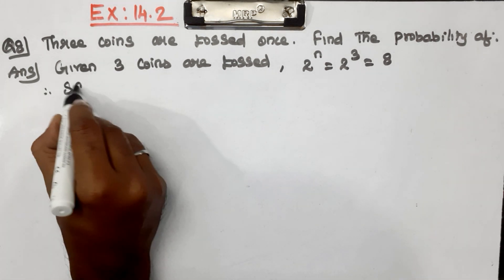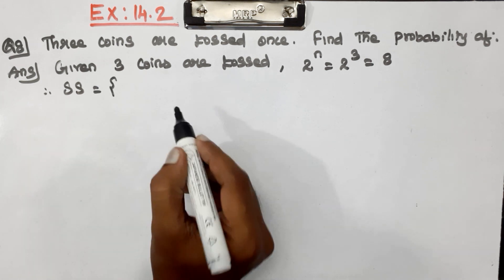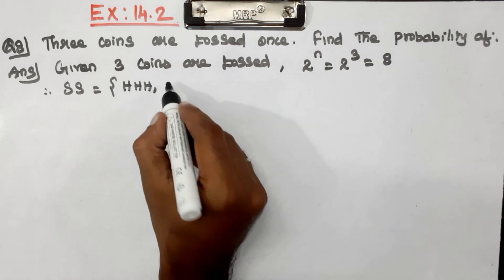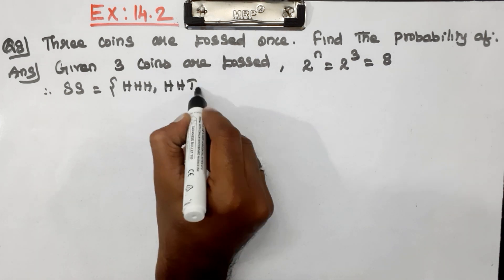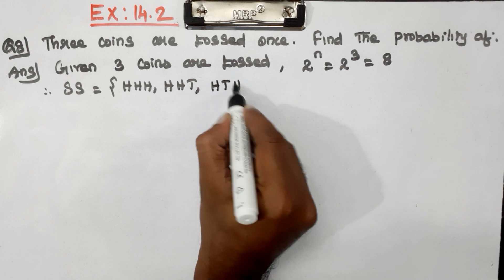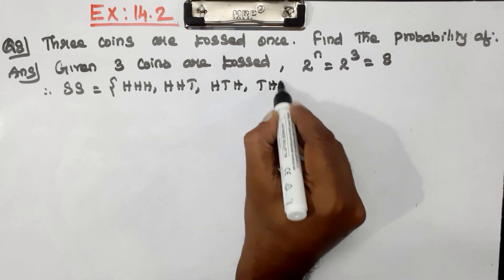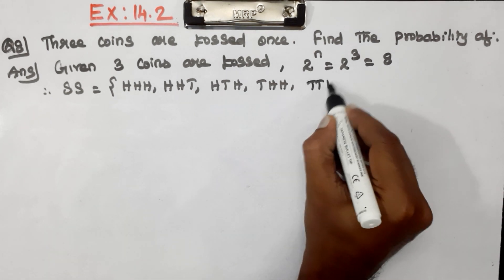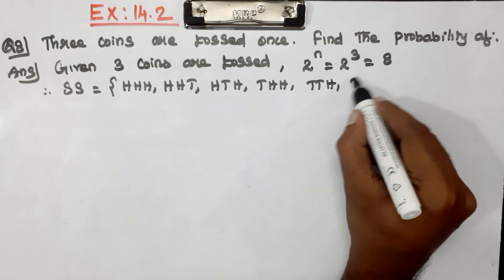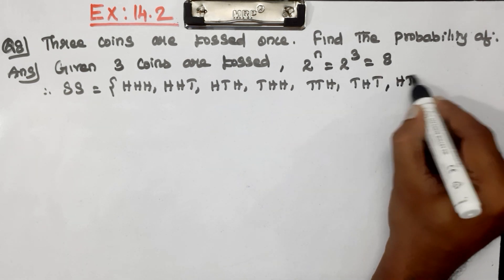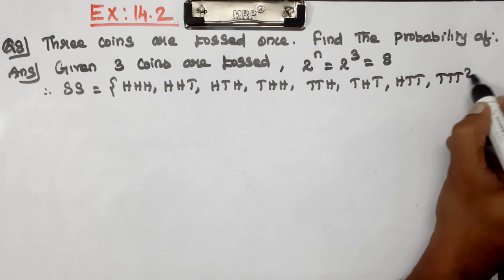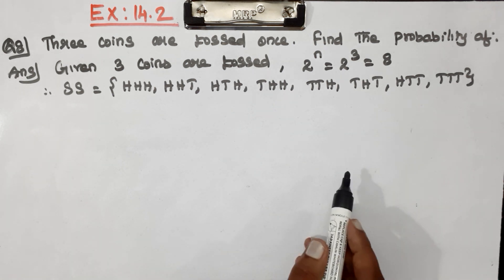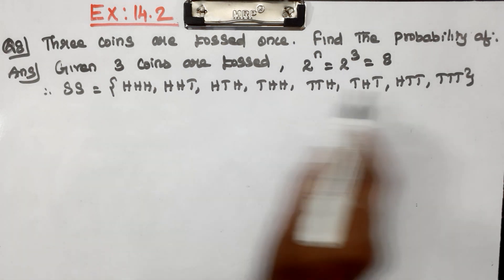Therefore, the sample space for three coins is: Head Head Head, Head Head Tail, Head Tail Head, Tail Head Head, Tail Tail Head, Tail Head Tail, Head Tail Tail, Tail Tail Tail. Count: 1, 2, 3, 4, 5, 6, 7, 8. So this is the sample space.